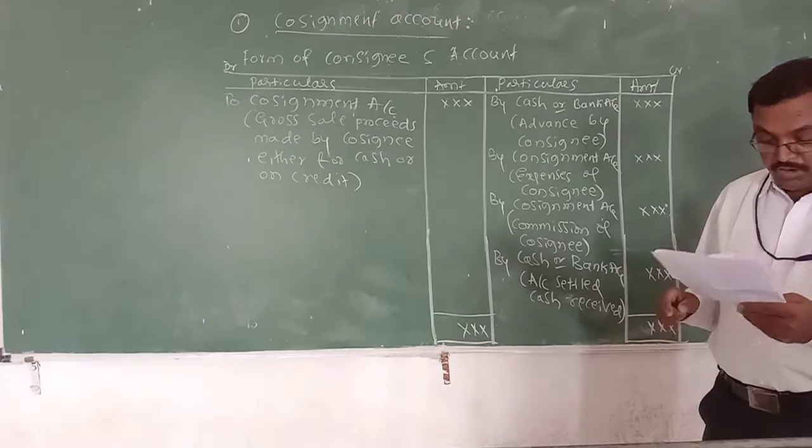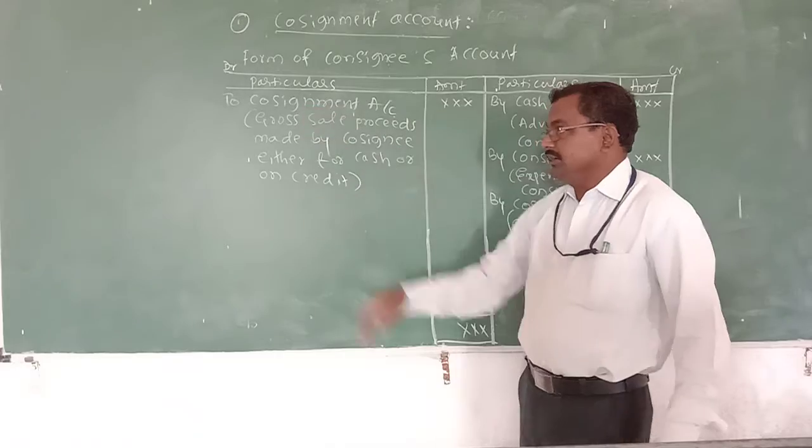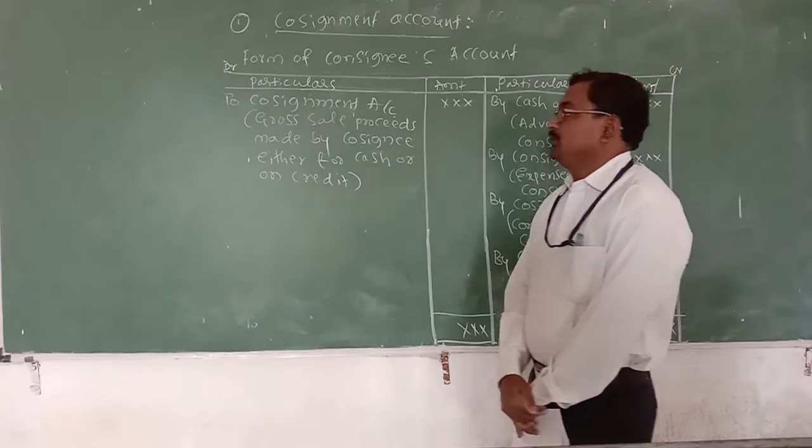It shows how much amount is due to the consignee or by the consignee, and then you are basically dealing with the balance in the account. Now, on the debit side of the consignee's account: